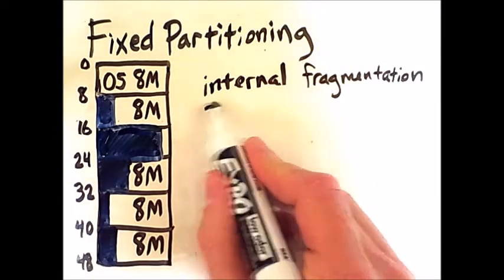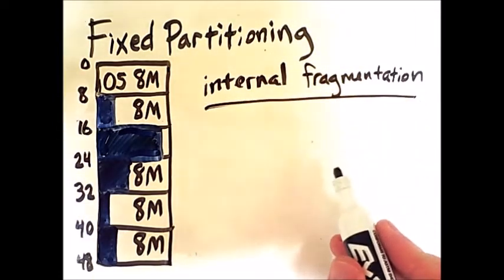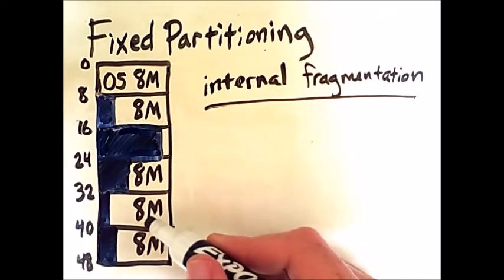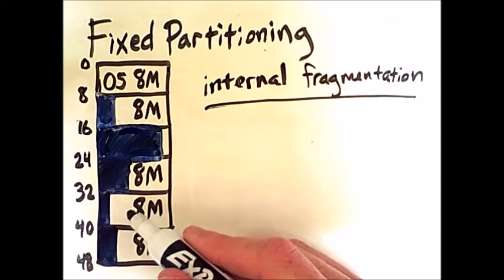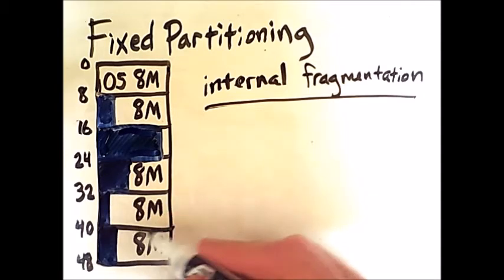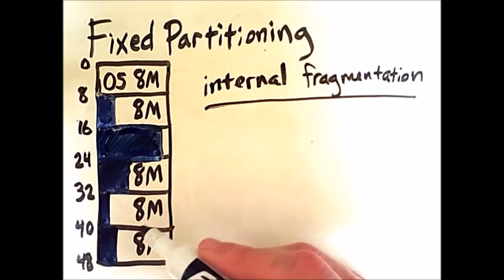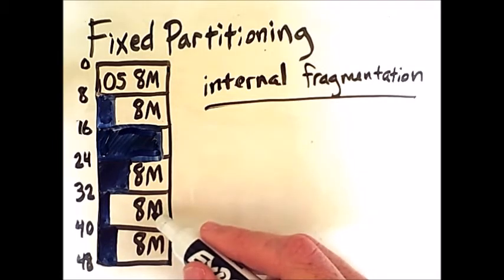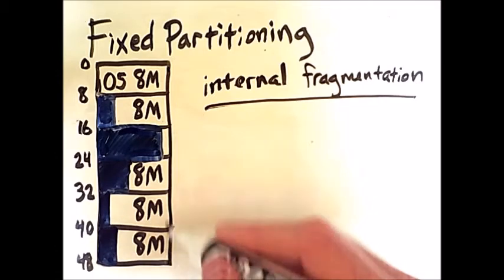Internal fragmentation is what we call it when space within a reserved partition is unused. It is internal to that partition, and the entirety of the partition belongs to a specific process, but that process is not using that space, hence it causes fragmentation.